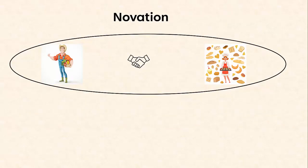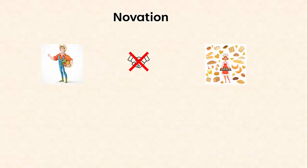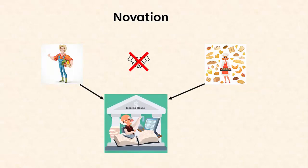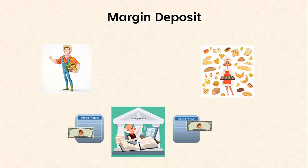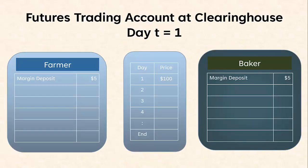Under the process of Novation, the Clearinghouse inserts itself into the middle of the trade and becomes the counterparty to each trader. It dissolves the original contract, and the Clearinghouse becomes the buyer for every seller and the seller for every buyer. Under Novation, the Clearinghouse takes on considerable counterparty risk — the risk that one of the counterparties defaults on its obligation. To manage this risk, the Clearinghouse requires that each trader deposit money in its trading account, called margin. In this example, we'll assume the trade is executed on day T=1 when the price is $100. Each trader deposits margin of $5.